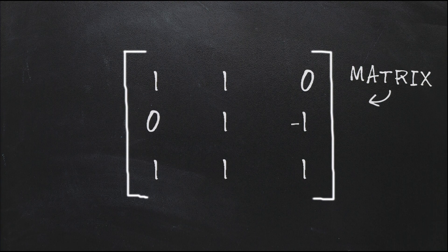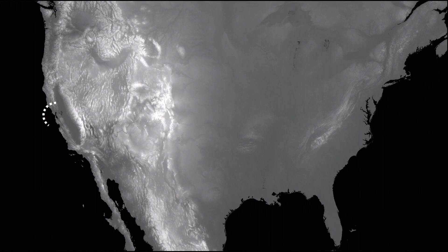Now this table of coefficients we call the matrix. And the matrix is so famous, they even made a few movies after it. And like Morpheus says in this movie, the matrix is everywhere. It's all around us, even now, in this very room.